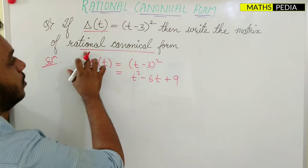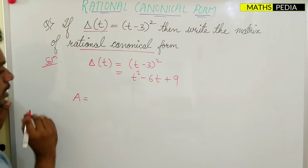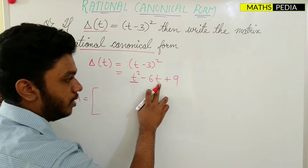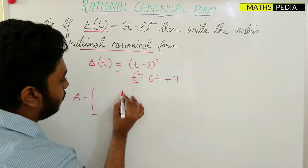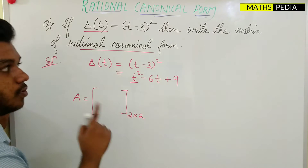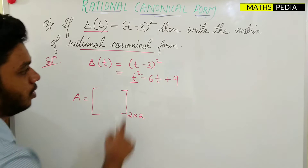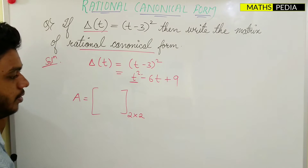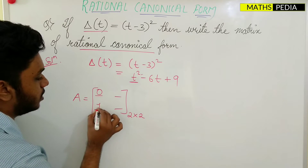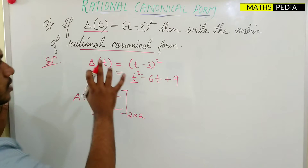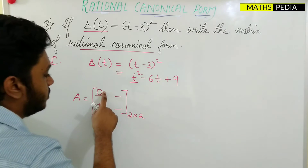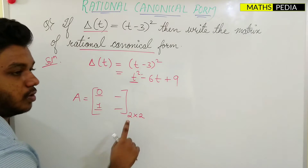From this expanded form we can write the matrix for rational canonical form. Let us assume the matrix is A. The highest power variable here is T, and the power is 2, so we get a 2×2 square matrix — always remember it will be a square matrix with two rows and two columns, giving four elements. For the 2×2 rational canonical form matrix, the first column is fixed: it will be 0 and 1.